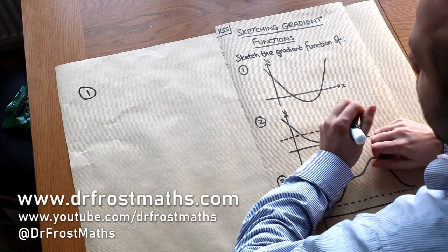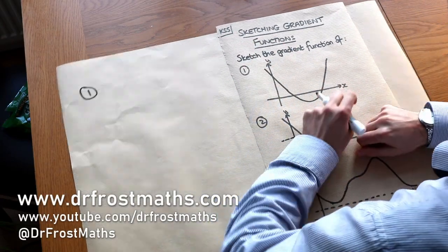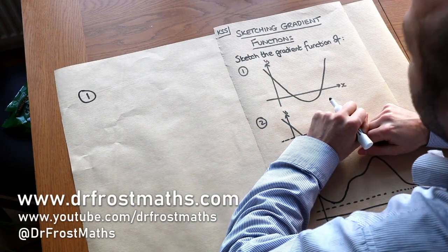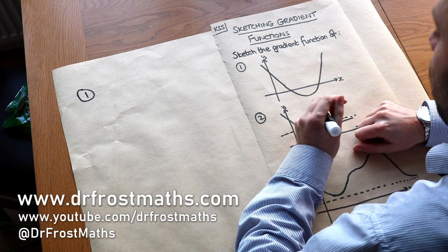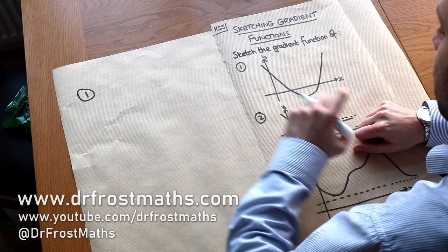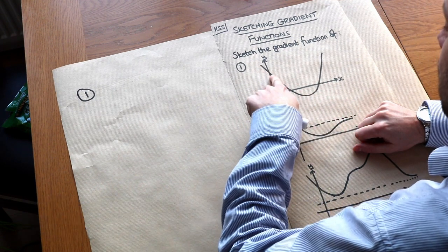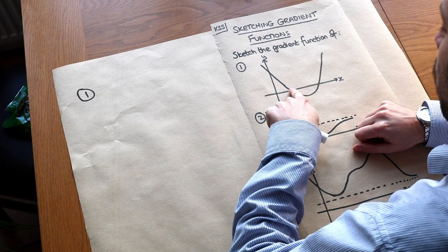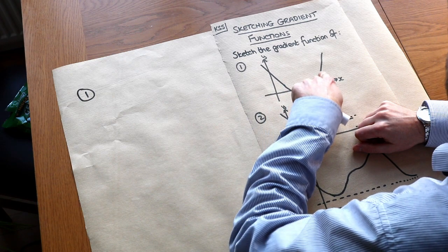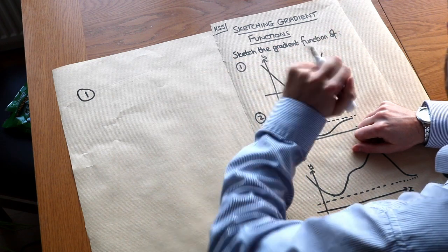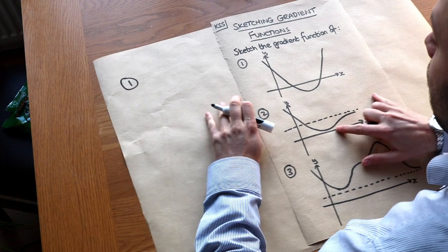Welcome to this Dr. Ross Maths video on Key Stage 5 Sketching Gradient Functions. What I mean by the gradient function is: as we gradually consider different values of x, what is the gradient for each value of x? And then we're going to plot those gradients on a graph.